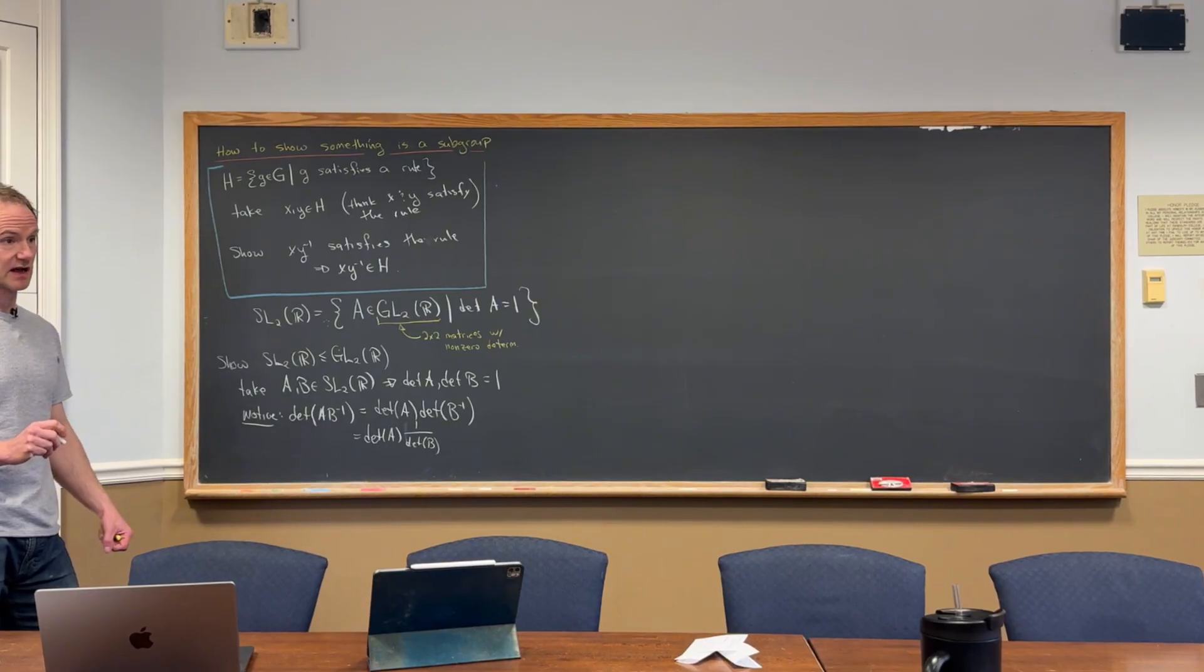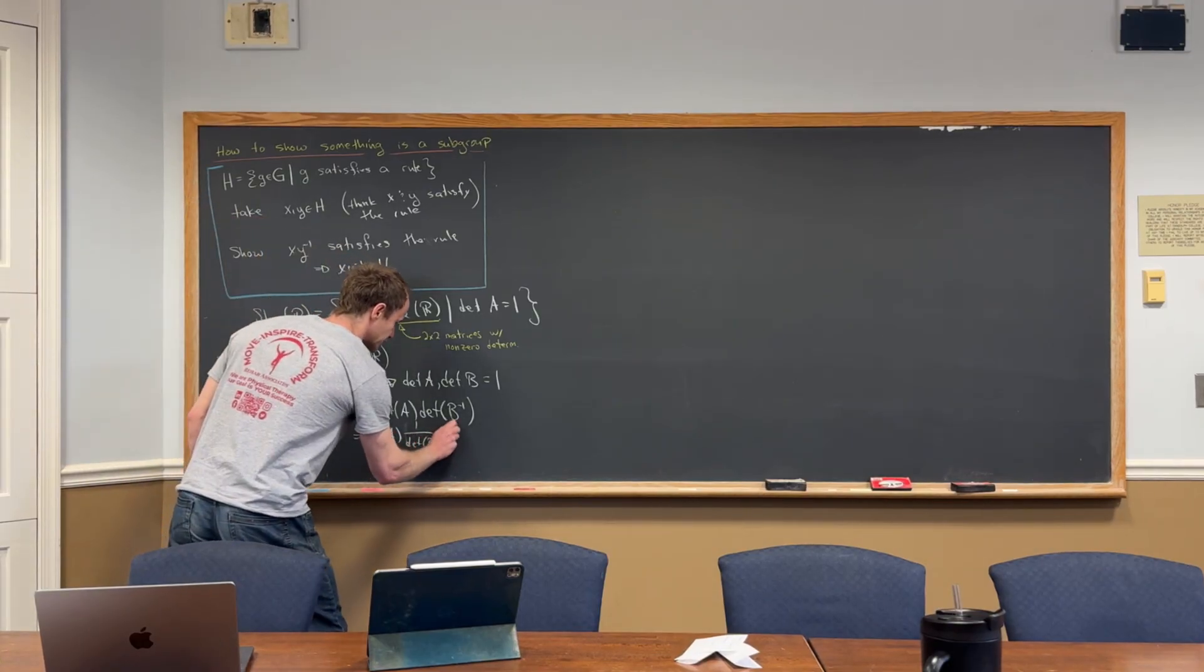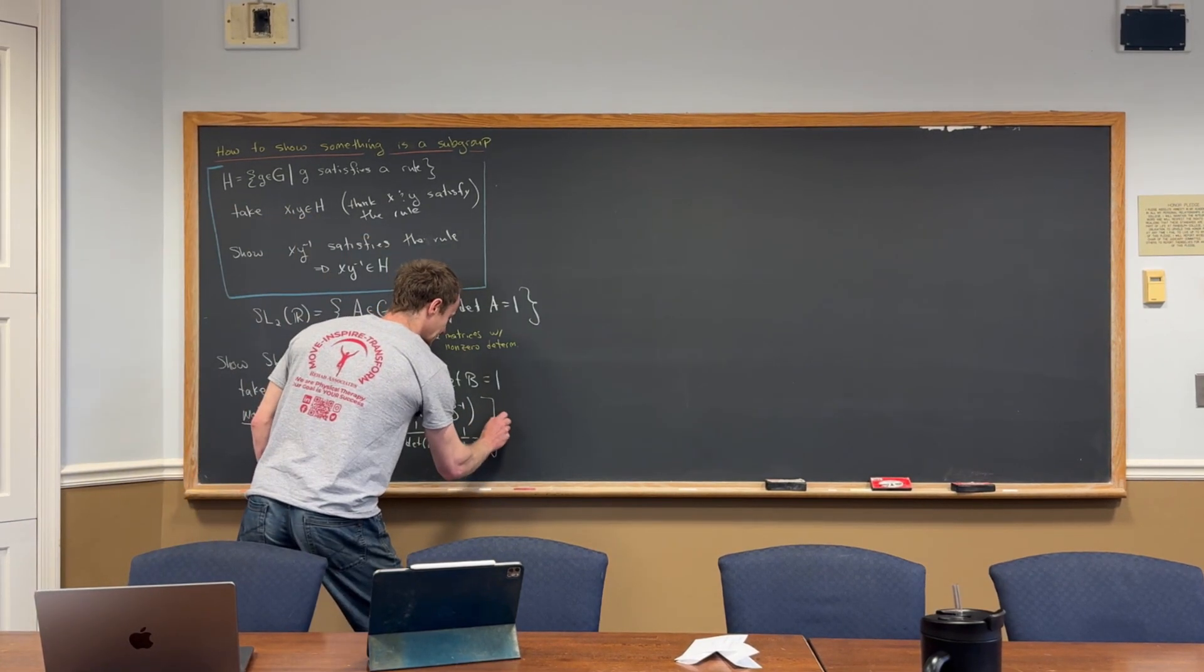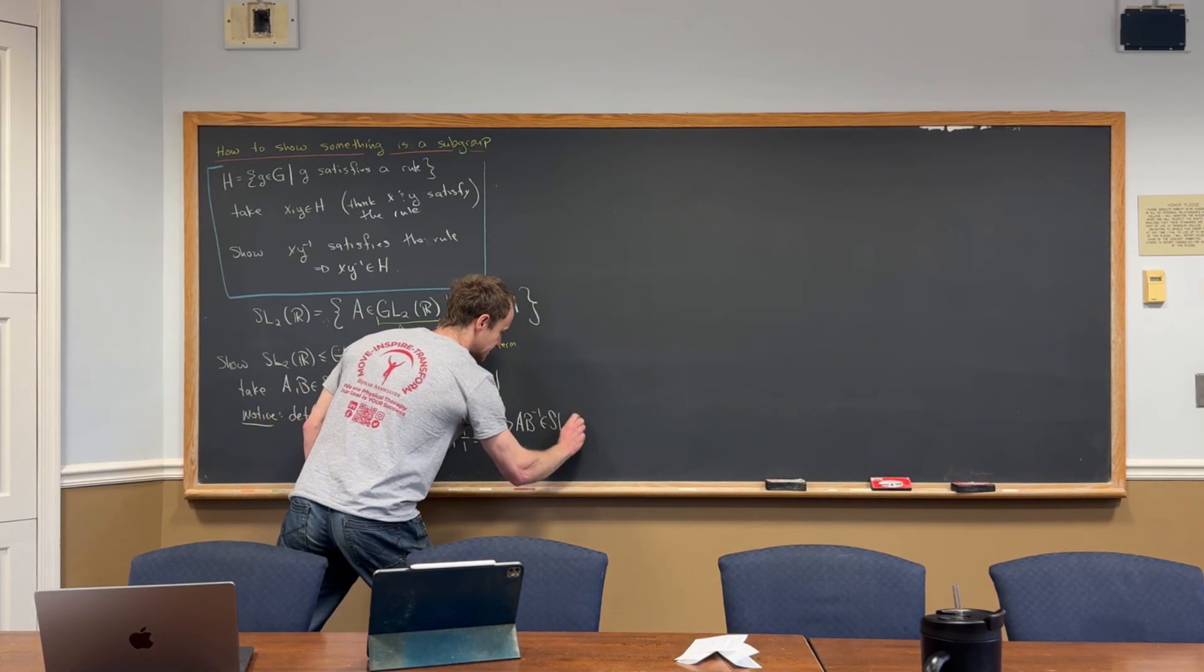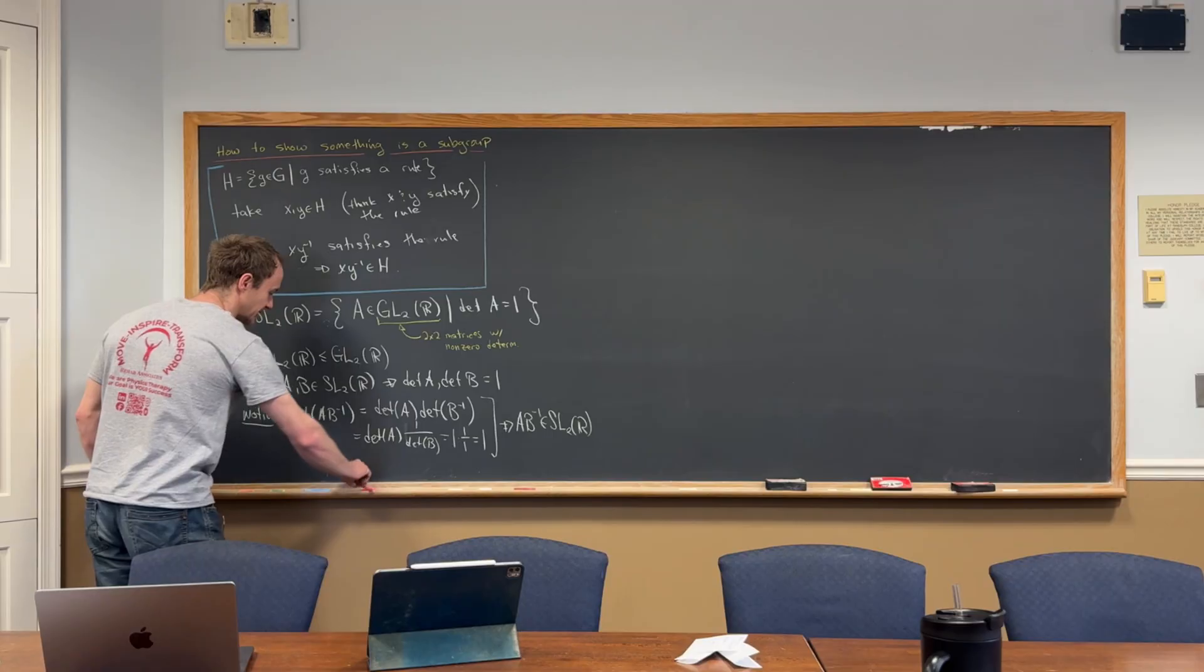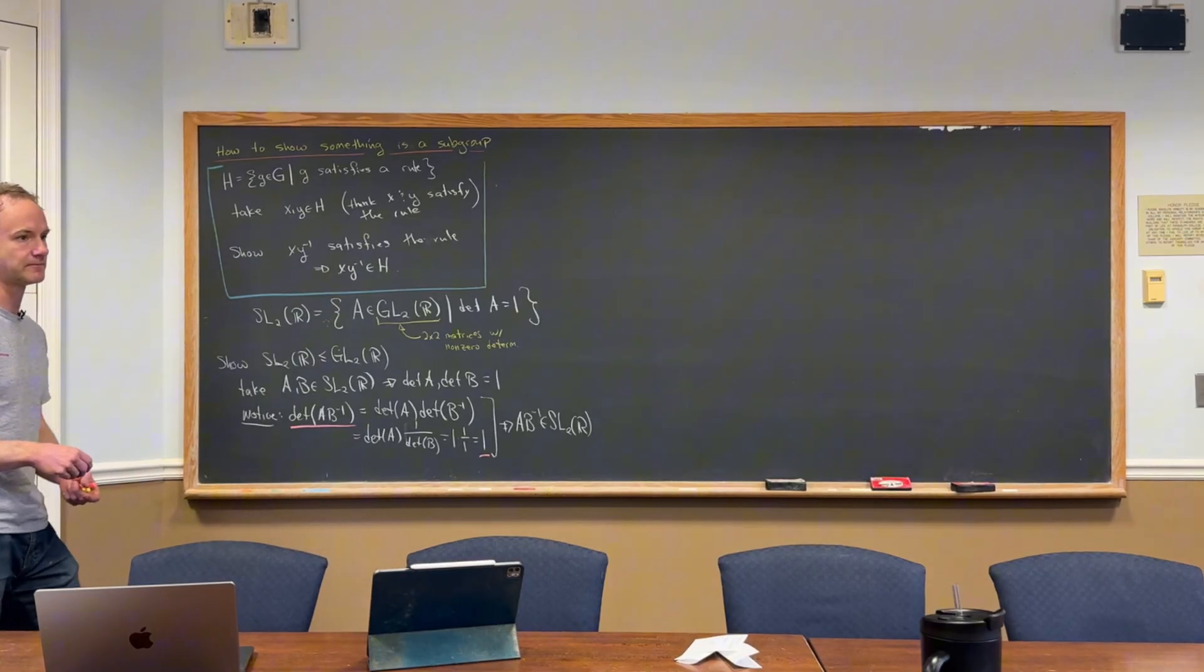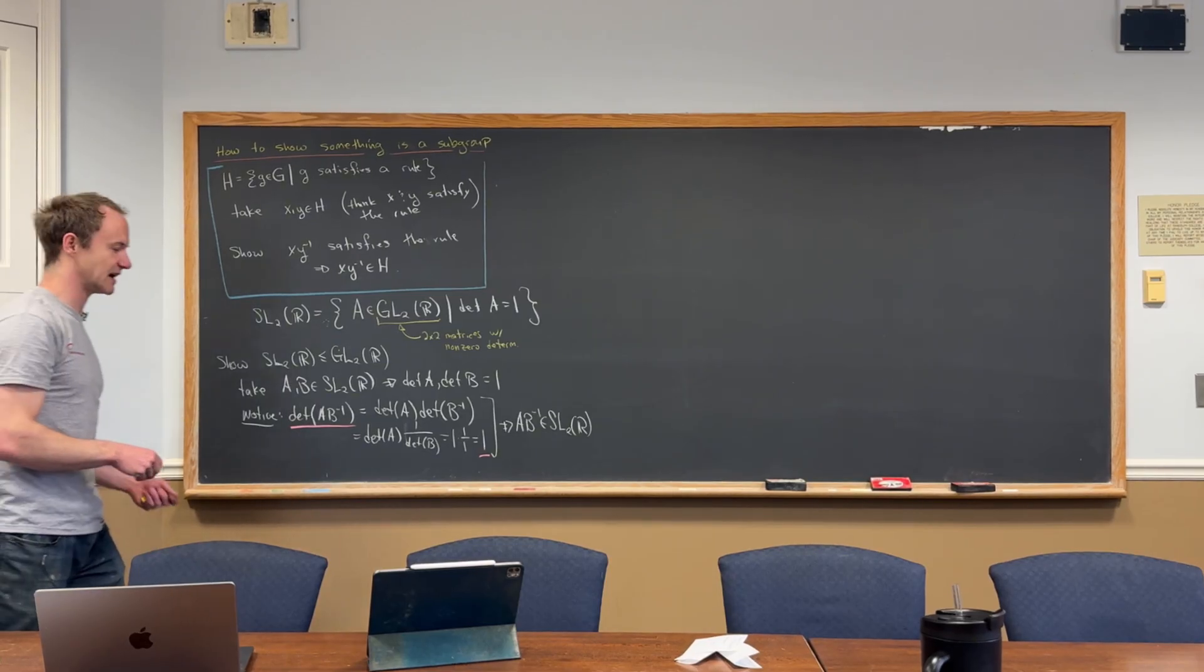Okay, do those seem kind of familiar from linear algebra? But then look, we know determinant A and determinant B are both one, so this turns into one times one over one, which is equal to one. So now this calculation tells you that A B inverse is inside of this SL(2,R) because it satisfies the condition to be inside of there. The entry fee to be inside of that set is that your determinant is one. And then, well, the determinant is one, so you're in. So it is inside of that set.